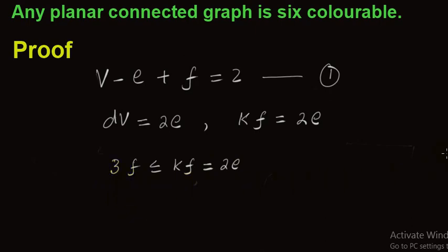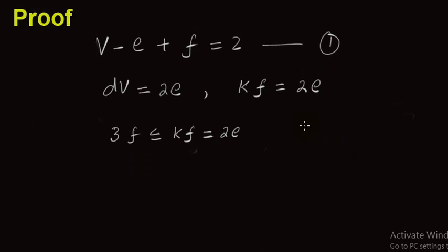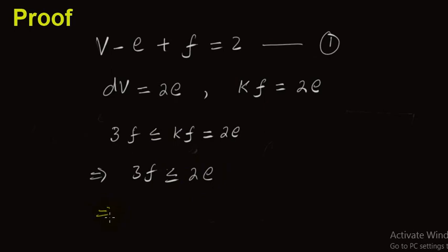From this we can write 3f is less than or equal to 2e. We can also write f is less than or equal to 2 over 3 times e.